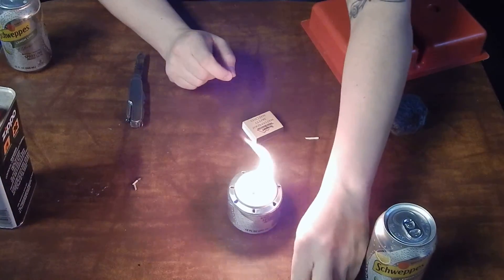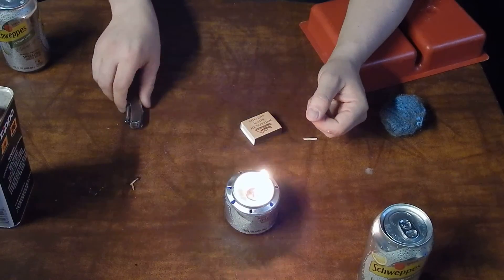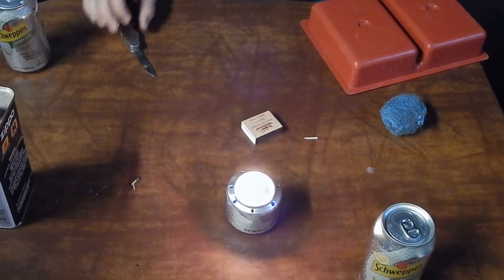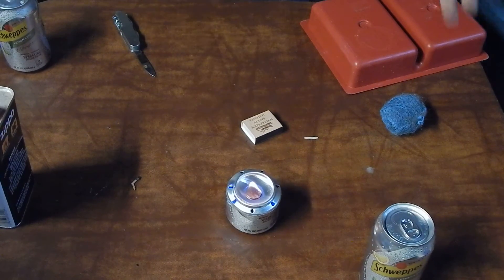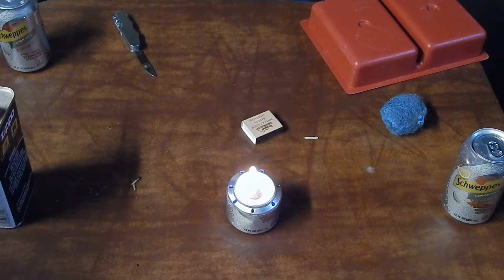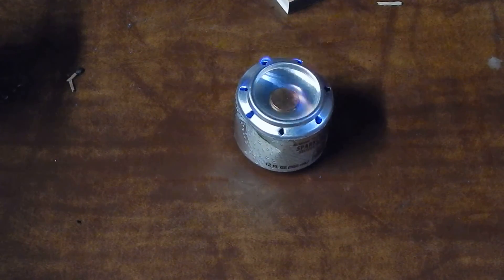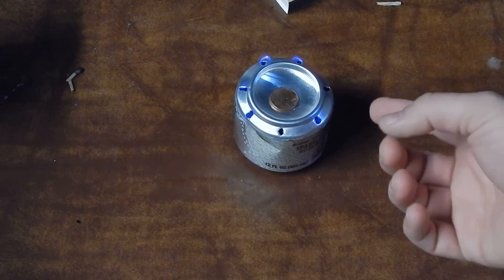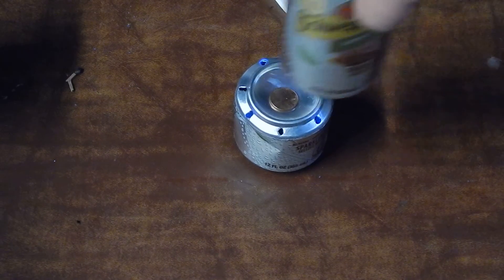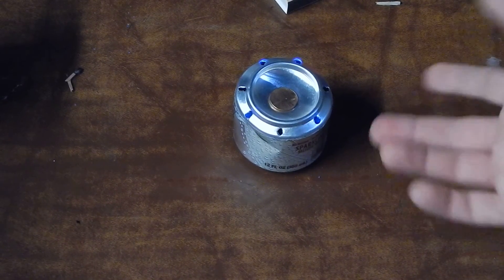You're going to ignite your can. And the reason why they call it a penny stove is because you've got to place a penny in the middle where you put your fuel, your accelerant in, because then it allows the outside holes to have the flame come out. This is very useful because now you're able to rest something on top and you're able to heat it up without extinguishing the flame.